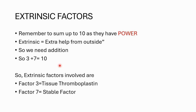Extrinsic literally means getting help from outside. For the extrinsic pathway we need external help, and again we need to reach factor 10 — the senior with power. The easiest way to do that: 3 plus 7 equals 10. So the extrinsic pathway involves factor 3 (tissue thromboplastin) and factor 7 (stable factor).